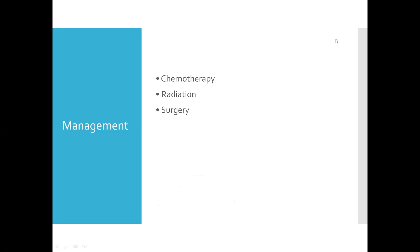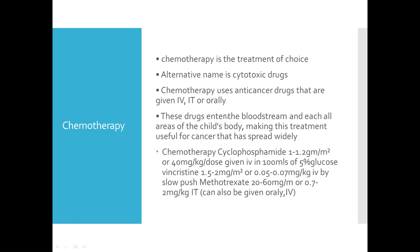Under management, we have chemotherapy, radiation, and surgery. Chemotherapy is the treatment of choice — also called cytotoxic drugs. Chemotherapy uses anti-cancer drugs given intravenously, intrathecally, or orally. These drugs enter the bloodstream and reach all areas of the child's body, making this treatment useful for cancer that has spread widely. Chemotherapy drugs include cyclophosphamide, vincristine, and methotrexate.